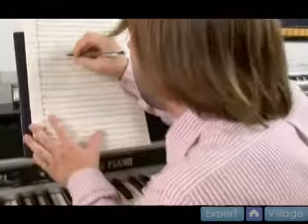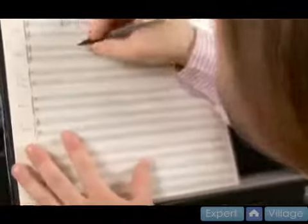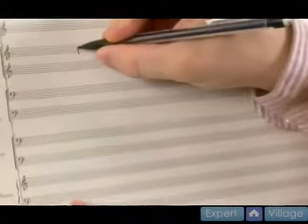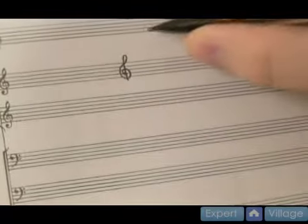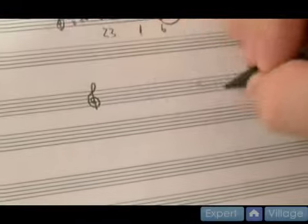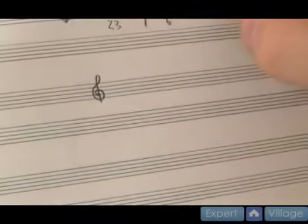Now if you go get a fake book or a real book like The Beatles Ultimate Fake Book or Anthology, everything's going to be written pretty much in treble clef. You're going to see some chord changes up here and basic melody notes here like you see here.